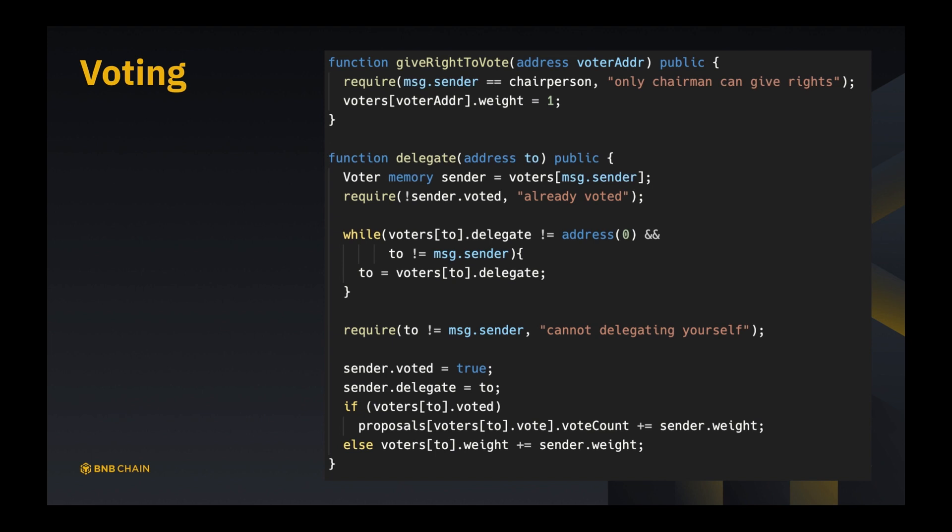Then we say sender.voted is true because he already picked a delegate - he cannot pick two delegates, he cannot both pick a delegate and vote. So we say okay, you're done, you can't do anything else. We also say sender.delegate is going to be to. This sets the delegate because that will build up the delegate chain if somebody else points to sender. Then if voters[to].voted, that means his delegate has already voted, then we need to vote directly and we say proposals[voters[to].vote].voteCount is going to plus by sender.weight. Otherwise, we simply say voters[to].weight is going to be increased by sender.weight, so voters[to] now will be worth more votes if he makes a vote.